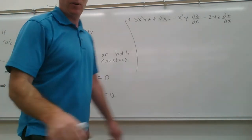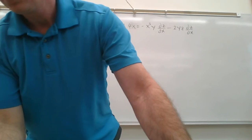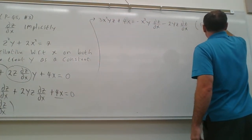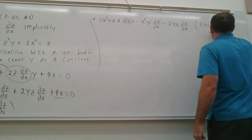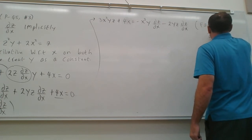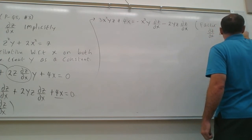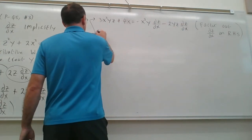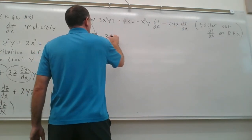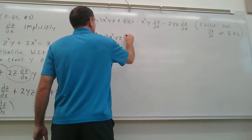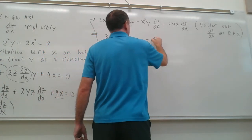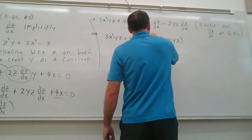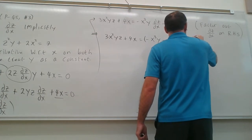Okay, then I can factor out. So let's factor out partial z with respect to x on right-hand side. So doing that, we'll get 3x²yz + 4x equals minus x³y minus 2yz, factoring out the partial z with respect to x.